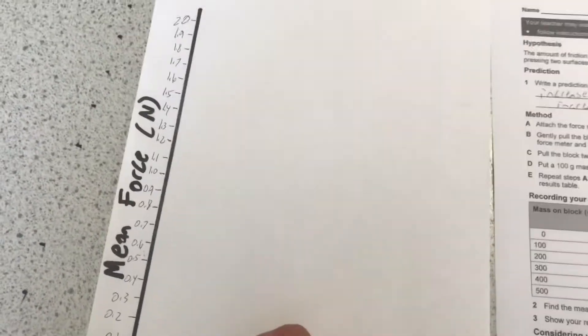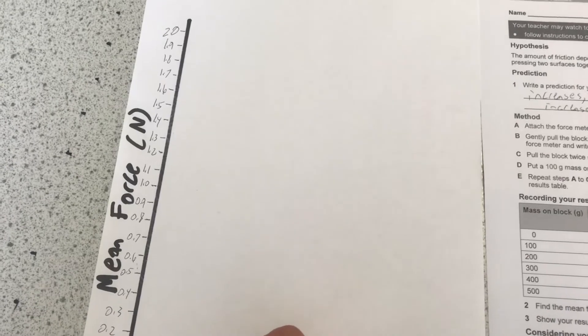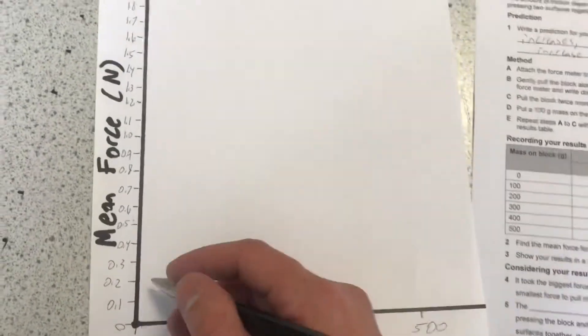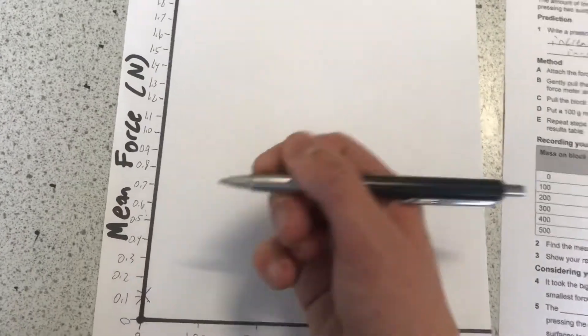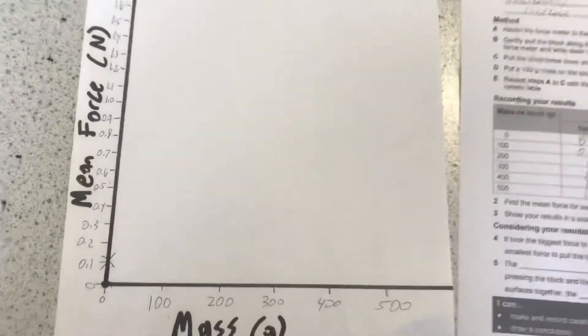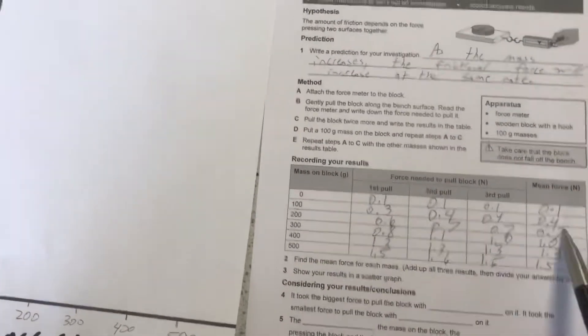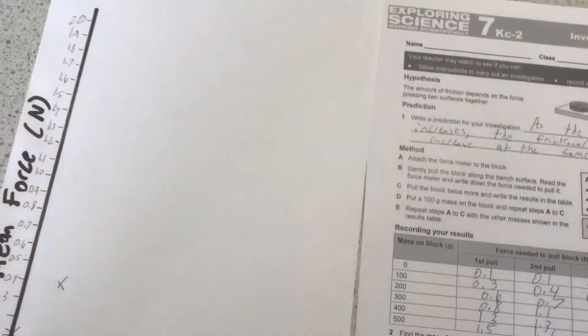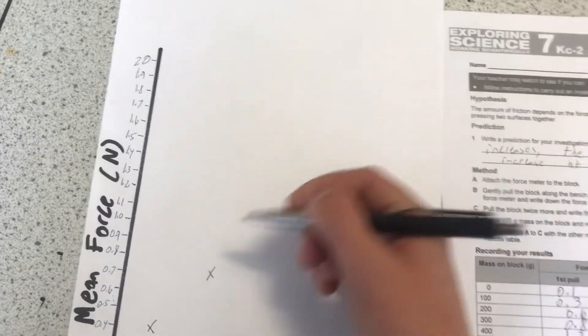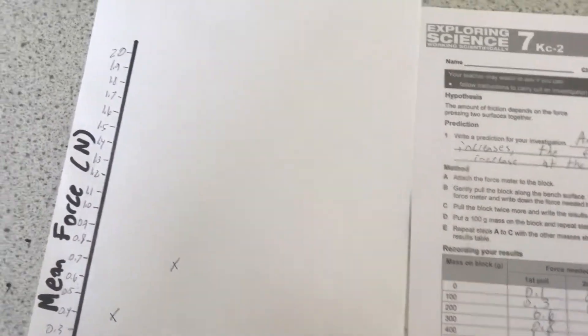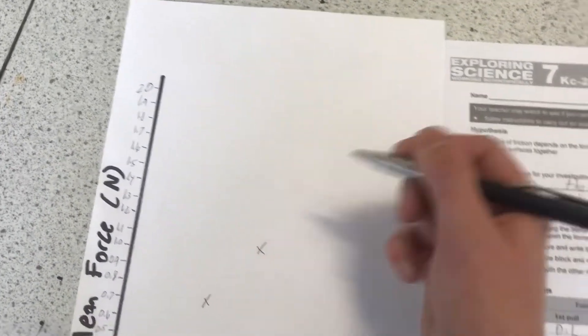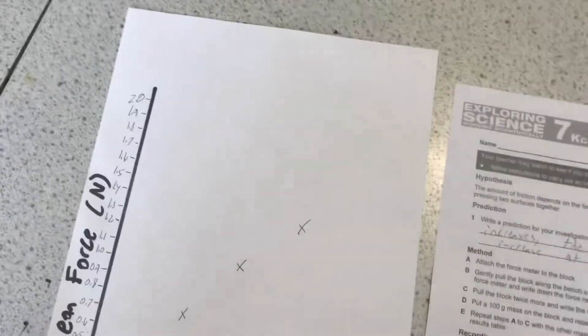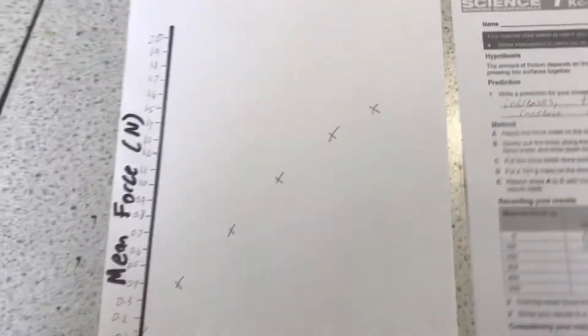Now we will be plotting our mean force. So with 0 grams, we had 0.1 Newtons. So I will put an x here. With 100 grams, 0.4 Newtons. With 200 grams, 0.7 Newtons. 300, 1.0. 400, 1.3. And 500, 1.5 Newtons.